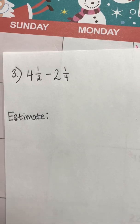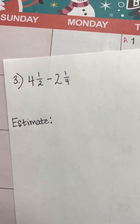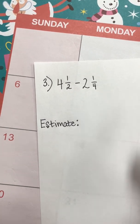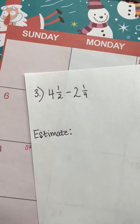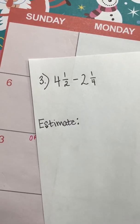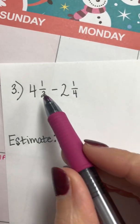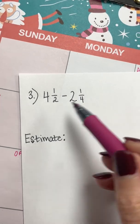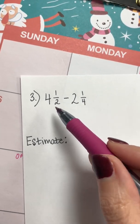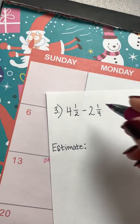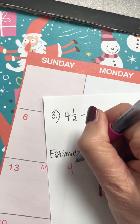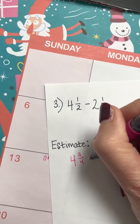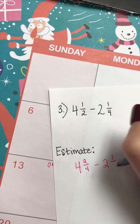Let's go on to number three — we are again subtracting, and I see two benchmark fractions here, which is unusual. We have fourths and a half. Maybe we can quickly make those match in our head: two out of four is the same thing as one-half.